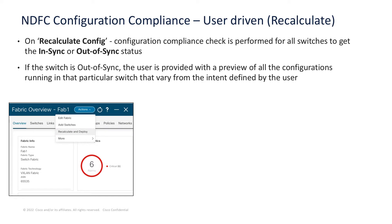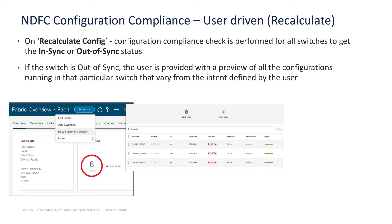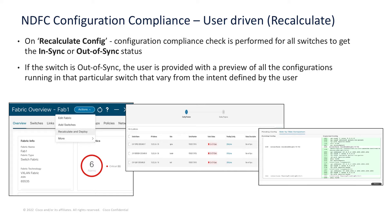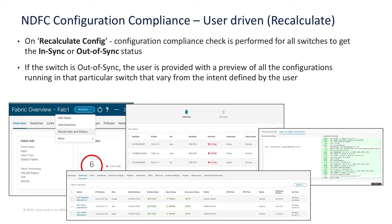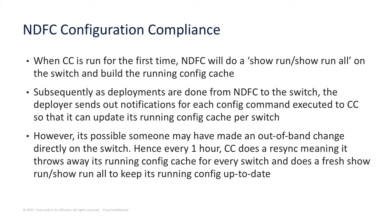For example, going into the fabric level and selecting Recalculate and Deploy — it's going to show a set of switches, mark any out-of-sync switches accordingly, and display the expected configuration with a side-by-side diff between the running and the expected config. Once deployed, the sync status will update to in sync. This is how you go from an out of sync to in sync status using the Recalculate Config option, and this is done at the fabric level.